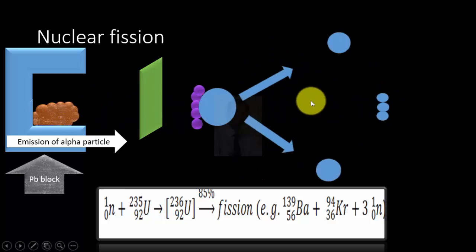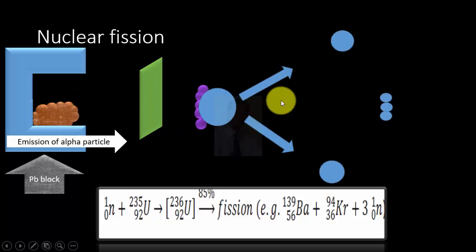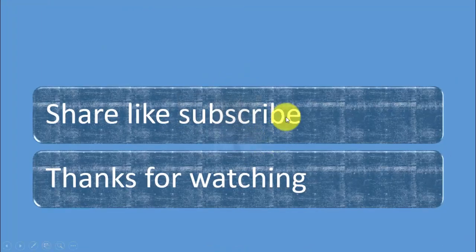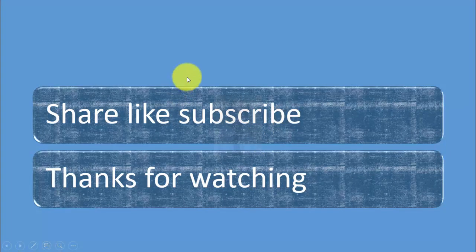And when these radiations are controlled by slowing them down, then we can get electricity from them in nuclear reactor. Share, like and subscribe. Thanks for watching.